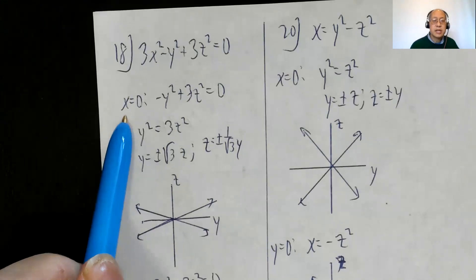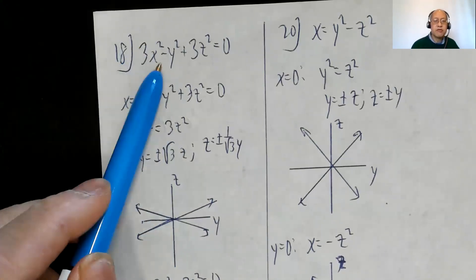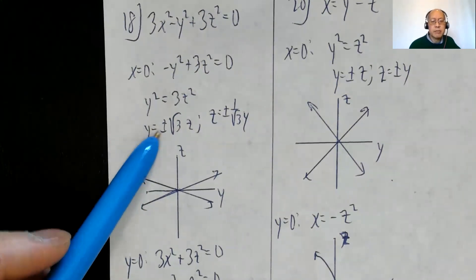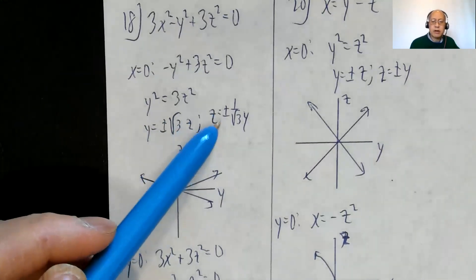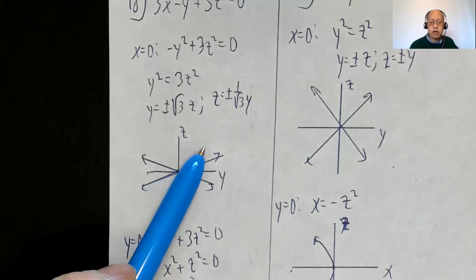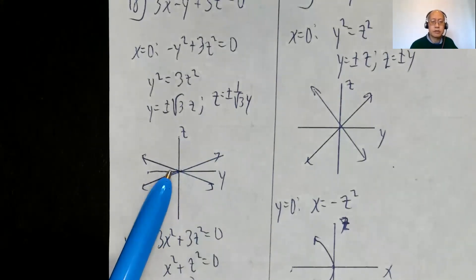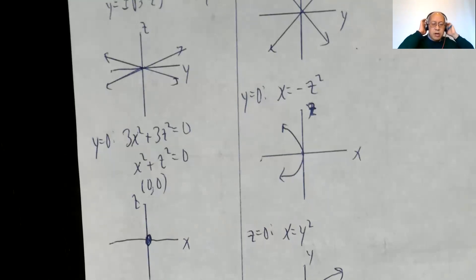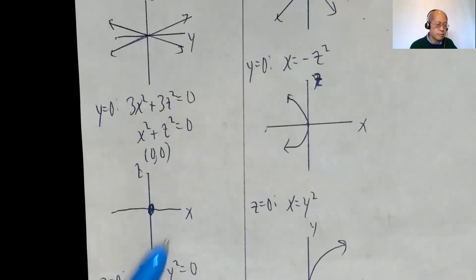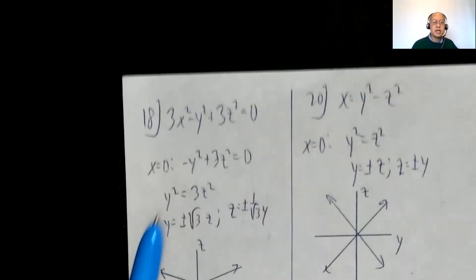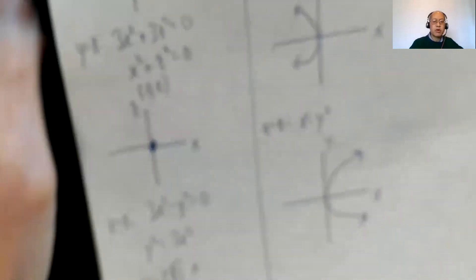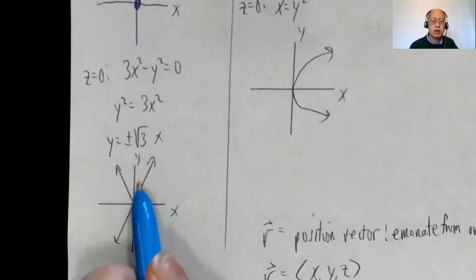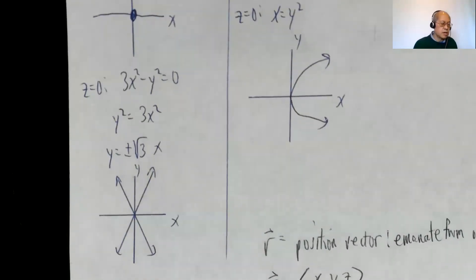Problem 18: For the YZ plane (X = 0): −Y² + 3Z² = 0, so Y² = 3Z², giving Y = ±√3 · Z — lines with slope approximately ±0.577 through the origin. For the XZ plane (Y = 0): 3X² + 3Z² = 0, so X² + Z² = 0 — only the origin. For the XY plane (Z = 0): 3X² − Y² = 0, giving Y = ±√3 · X — lines with slopes of √3 and −√3 through the origin.